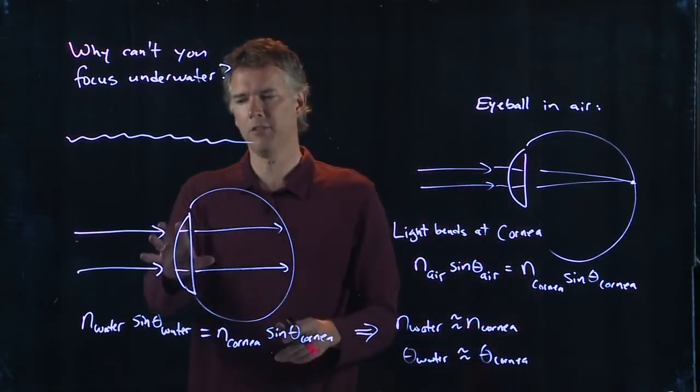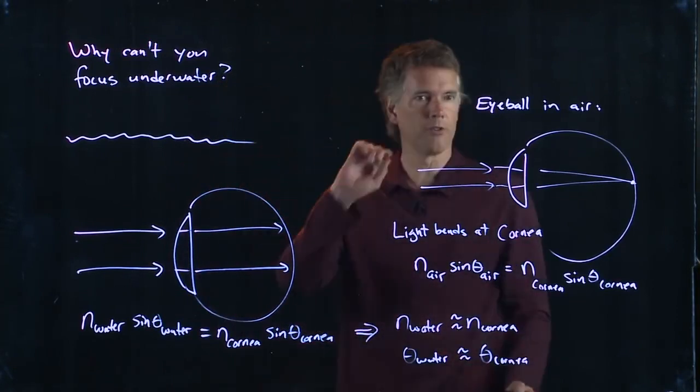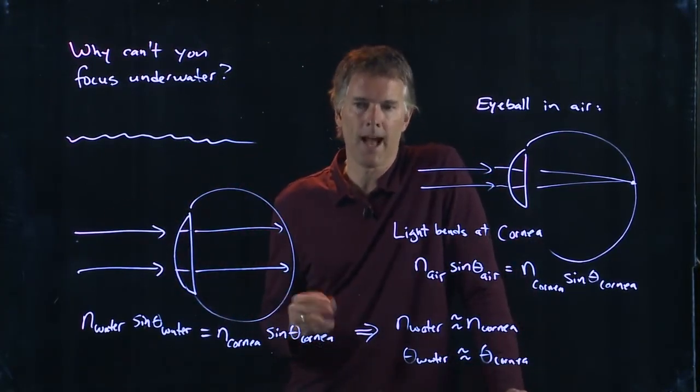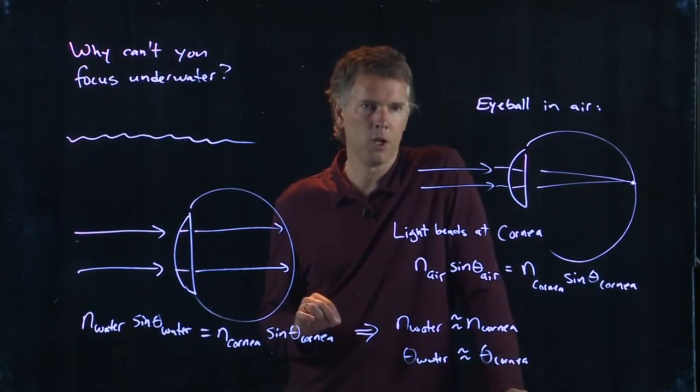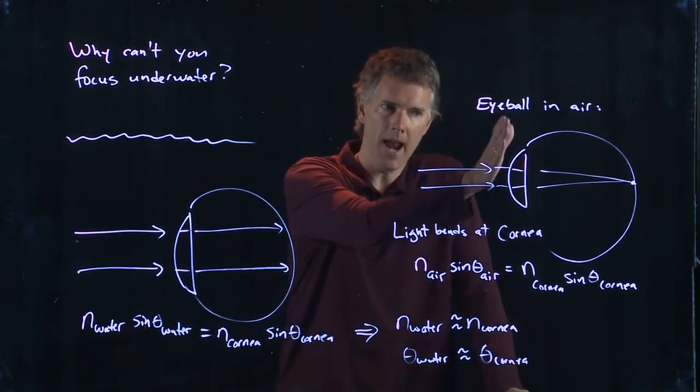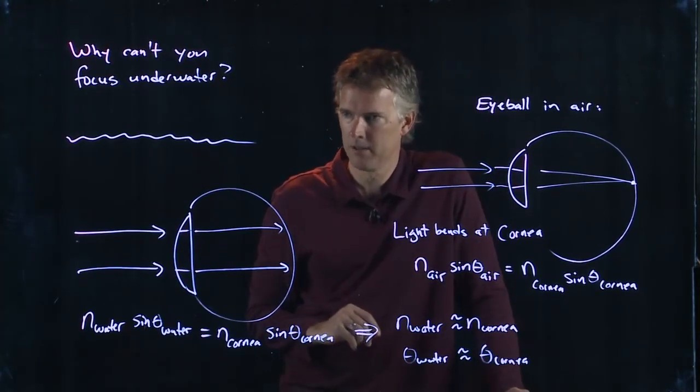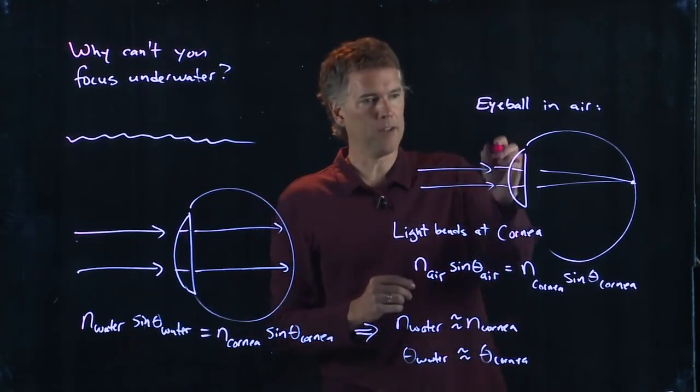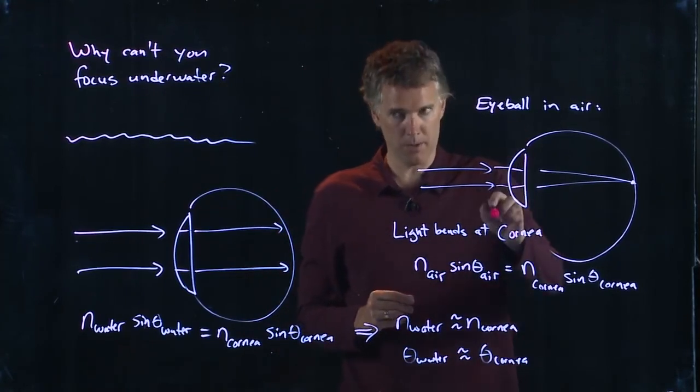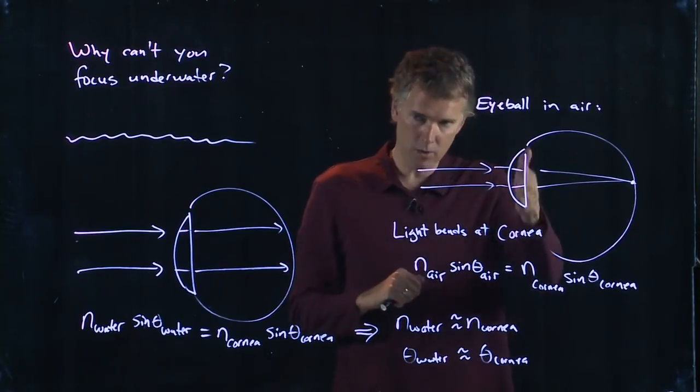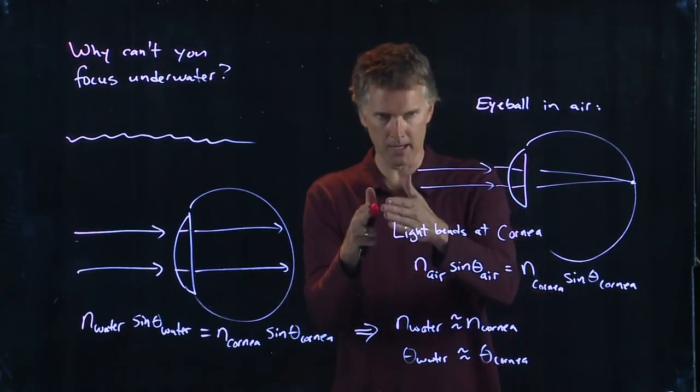So how do you fix this problem? When you're swimming underwater and you do want to see those fish, how do you fix the problem? You get an air-water interface again by putting on a mask. And by putting on that mask, you put a little air in front of your eyeballs. And when the light rays come through now and they go to the air-cornea interface, they can bend and come to a focus.